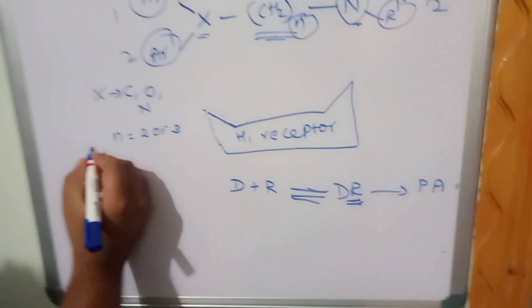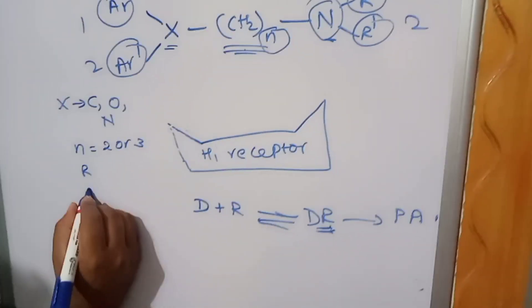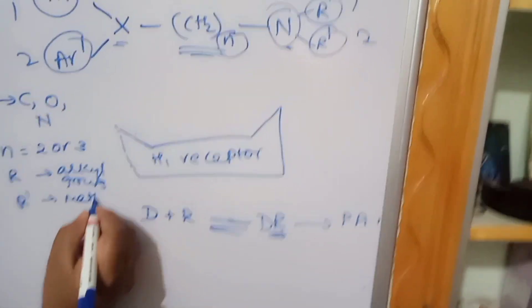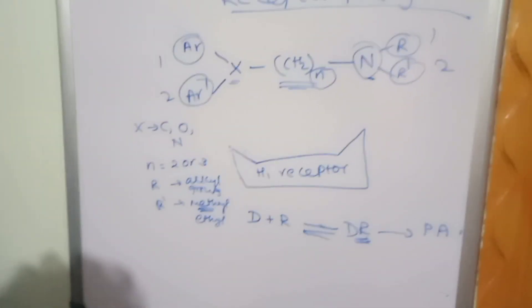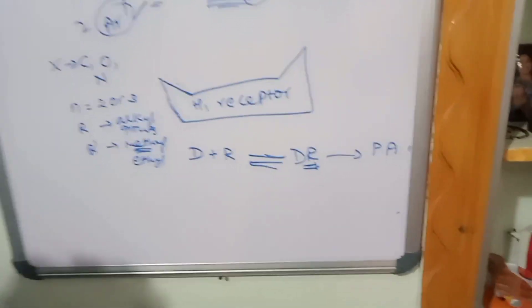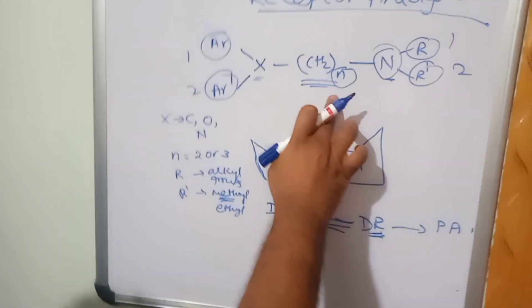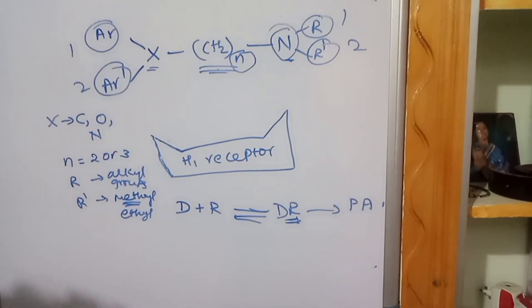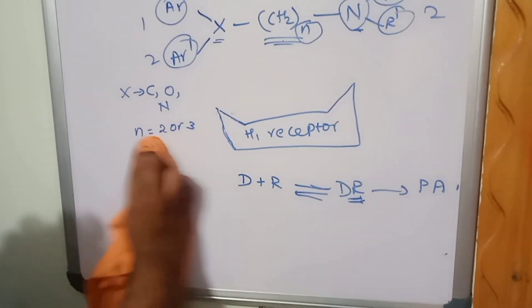If the carbon chain is more than three, the pharmacological activity decreases. So N must be either two or at most three. R and R' are alkyl groups — at most methyl or ethyl, but mainly methyl. So methyl alkyl groups are essential. The phenyl groups are required here, carbon/oxygen/nitrogen at X, an ethylene or propylene chain of up to three carbons is required, and alkyl groups up to ethyl are essential.